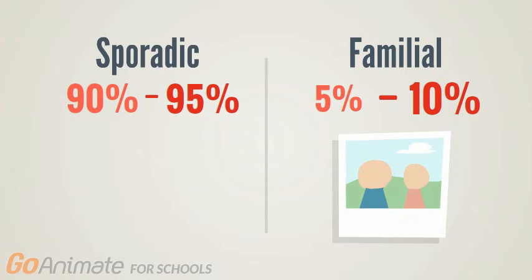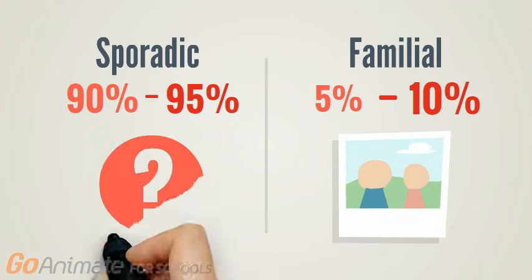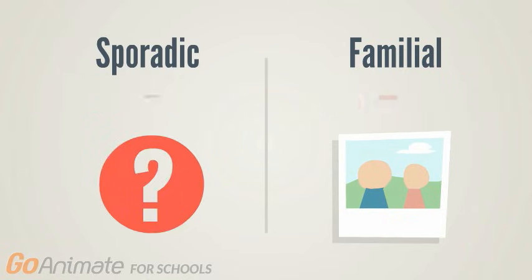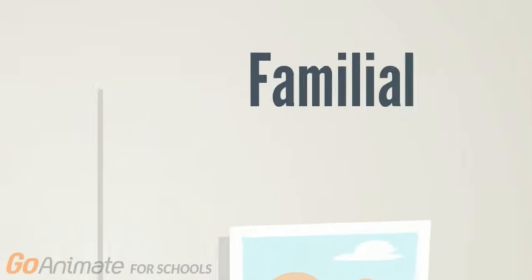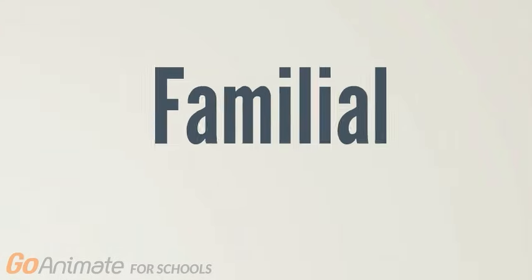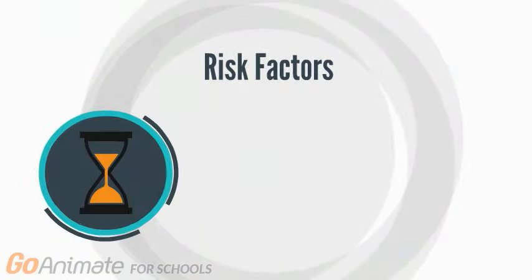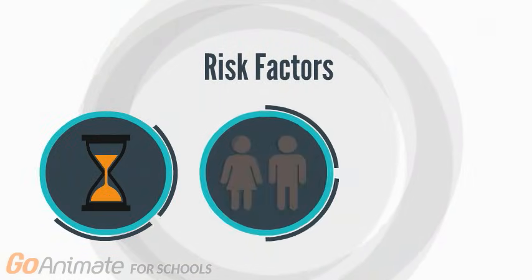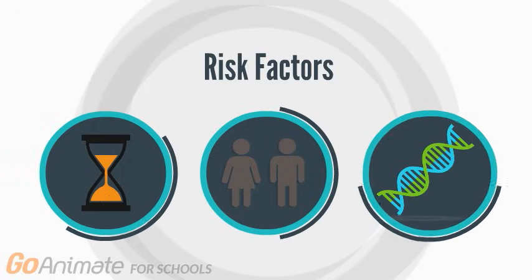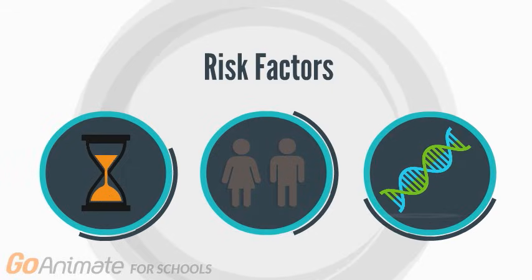Familial ALS is inherited and is only seen in 5 to 10% of all ALS cases. While the causes of sporadic ALS are still unknown, there are known facts about familial ALS that are helping to direct current research. Certain risk factors such as age, sex, and genetics affect the likelihood of ALS.